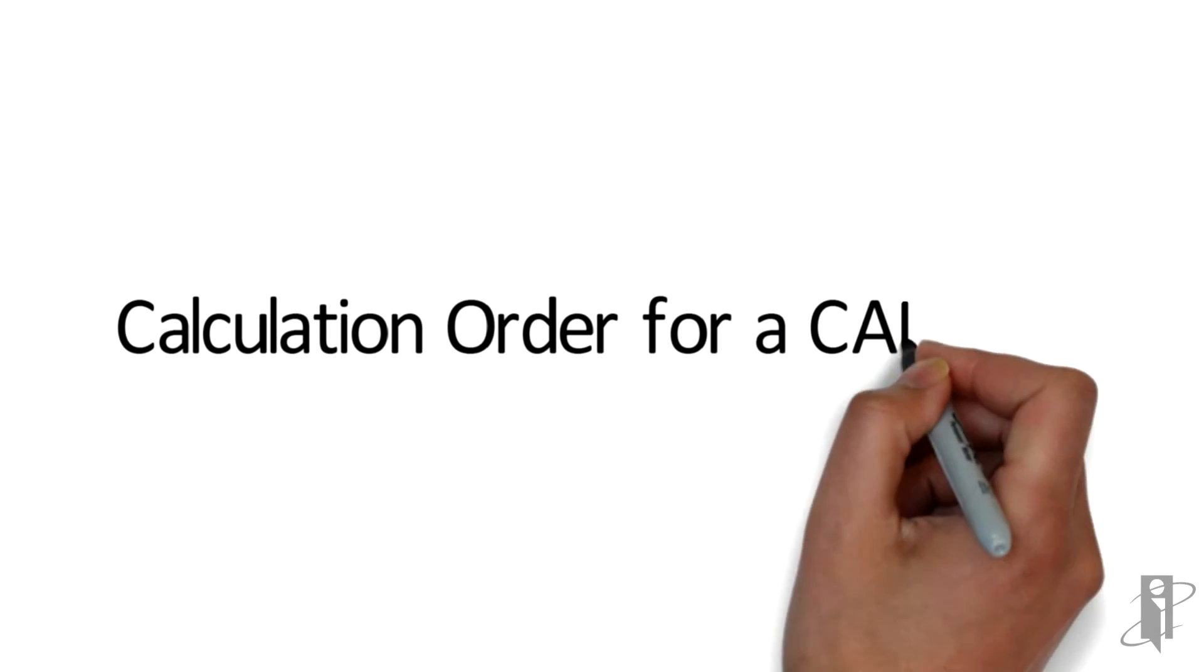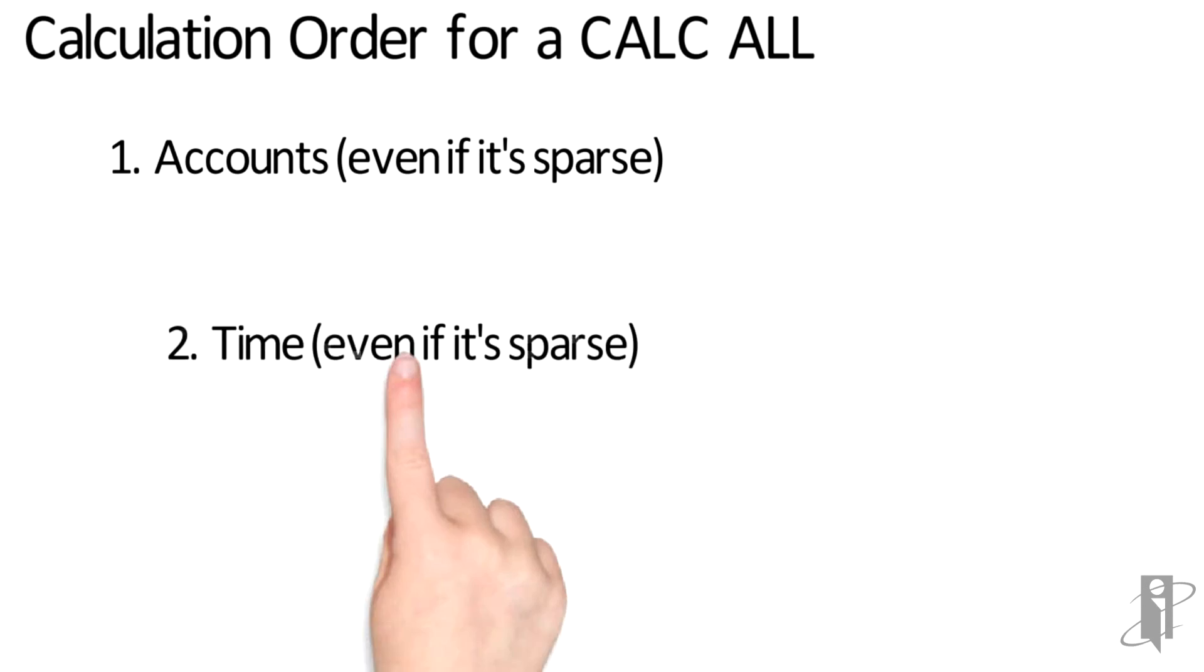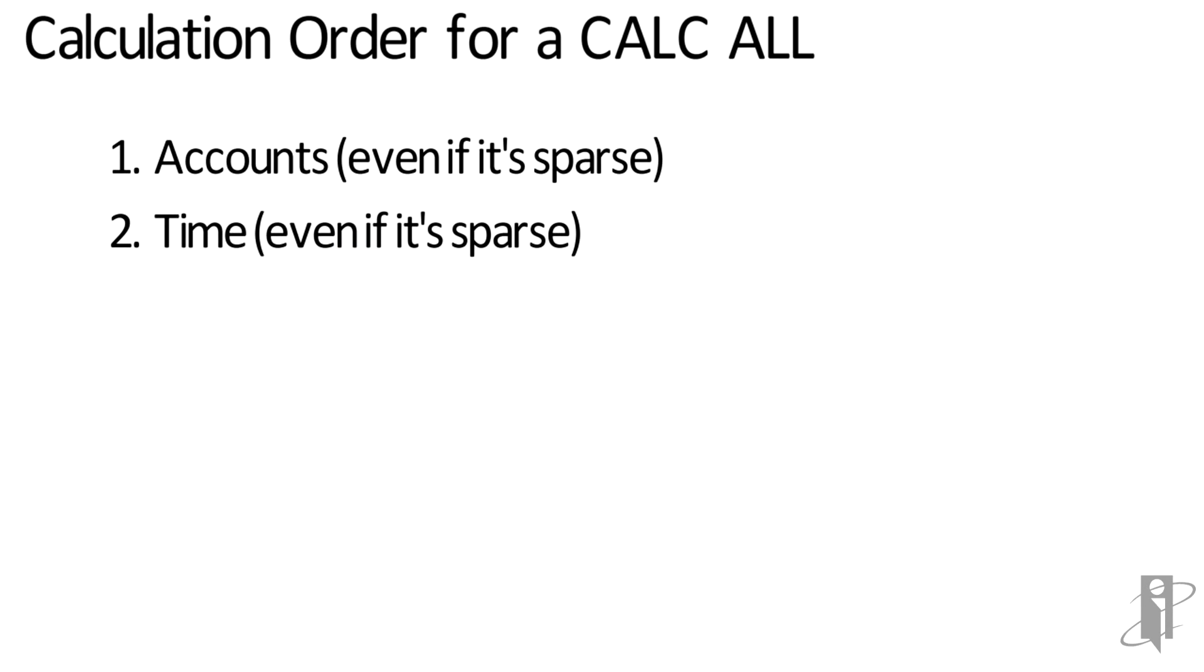When you run the CALC ALL command it aggregates the dimensions and calculates the member formulas in a very specific order. It goes to the outline and whatever dimension is flagged as the accounts dimension it's going to do first even if it's a sparse dimension. Then it's going to go to whatever dimension is tagged as time and it's going to do that second.